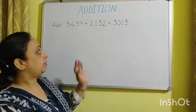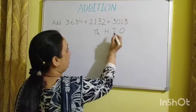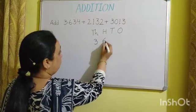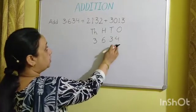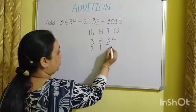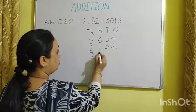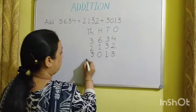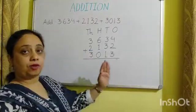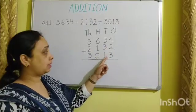Like two-number addition, we have the same way to add three numbers. First we are going to arrange them in columns: thousands, hundreds, tens, and ones. The first number we place is three thousand six hundred thirty-four. Below it we place the second number, two thousand one hundred thirty-two. Below that we place the third number, three thousand and thirteen. We put an addition sign and start adding from the rightmost place, the ones place: 4 plus 2 is 6, and 6 plus 3 is 9.